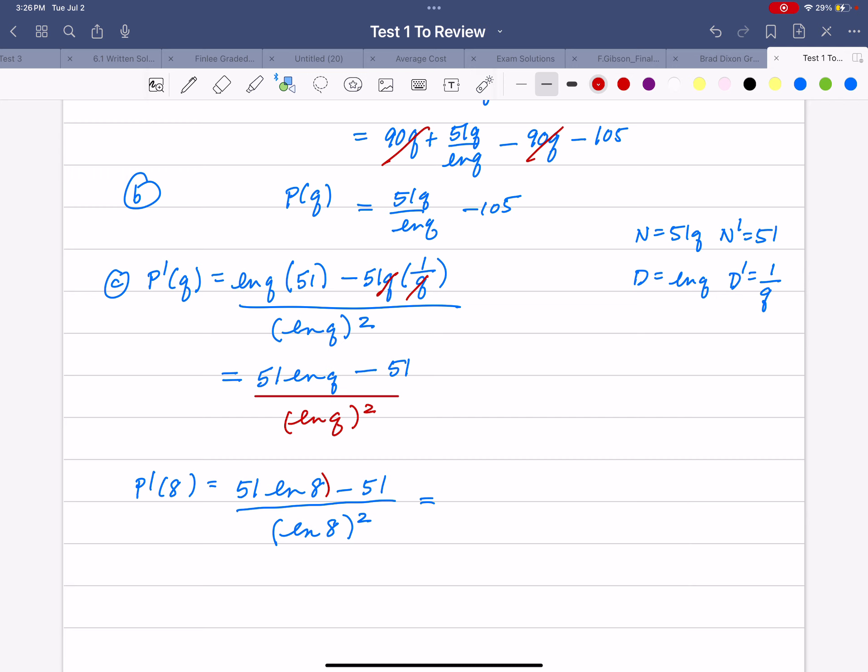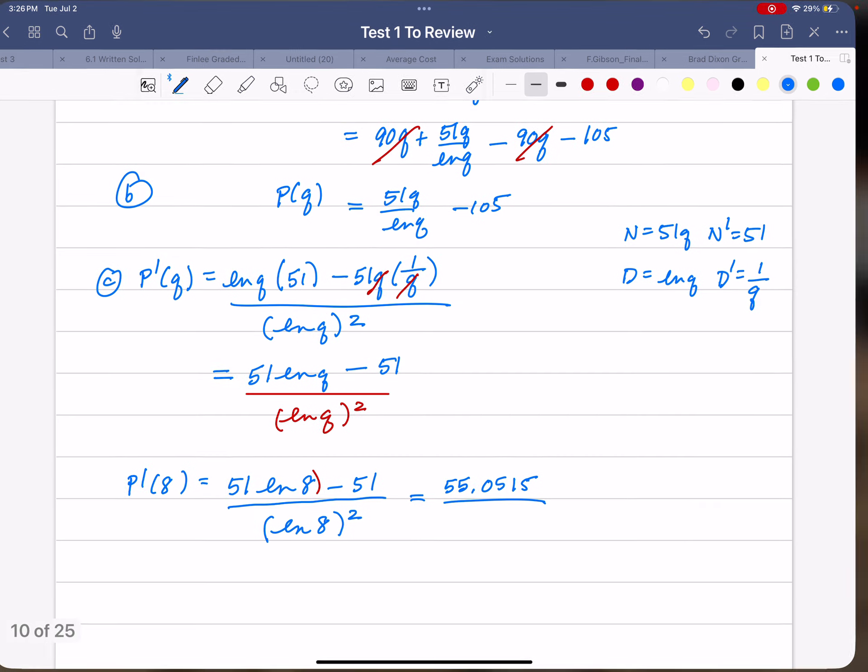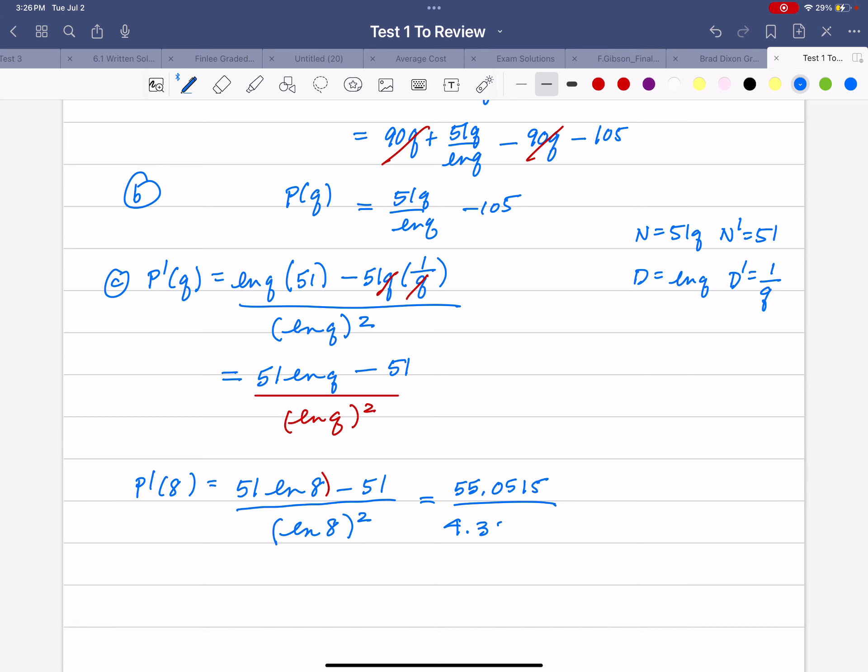You should get 55.0515 divided by the natural log of 8. Go ahead and press enter, then hit the square key, and you get 4.3241. Divide them out, 55.0515 divided by 4.3241, and you get to two decimal places,